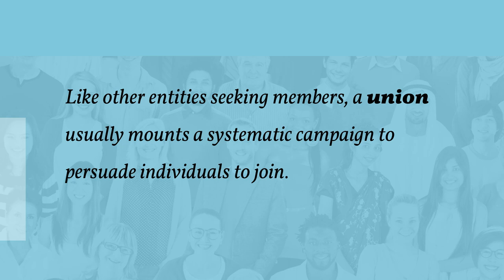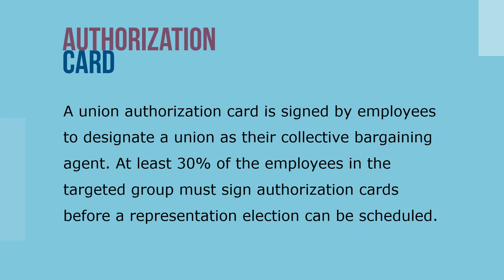A union authorization card is signed by employees to designate a union as their collective bargaining agent. At least 30% of employees in the targeted group must sign authorization cards before a representation election can be scheduled.